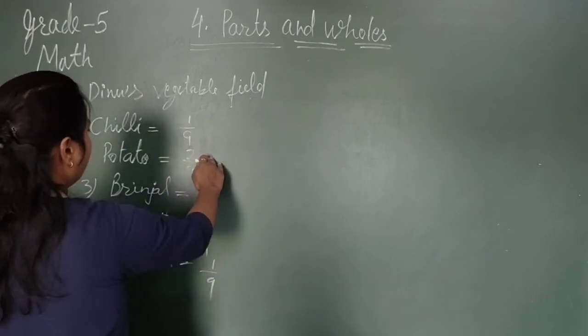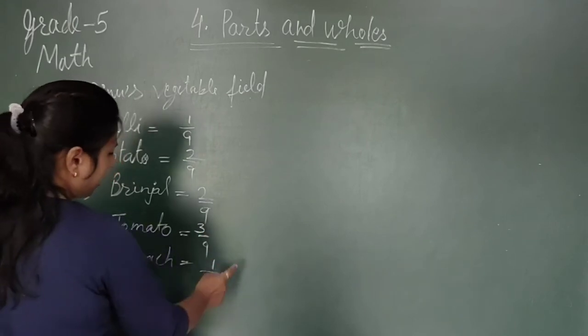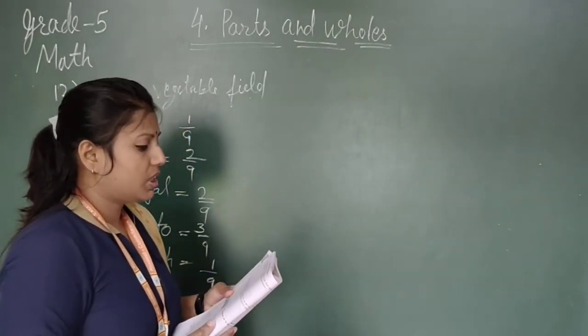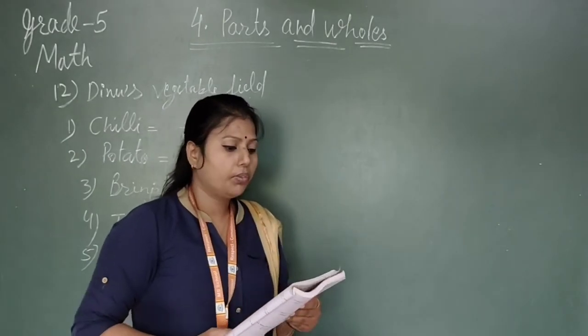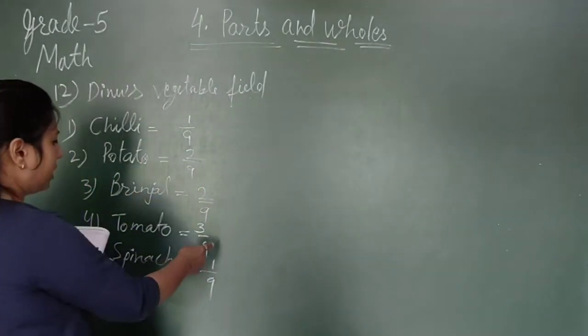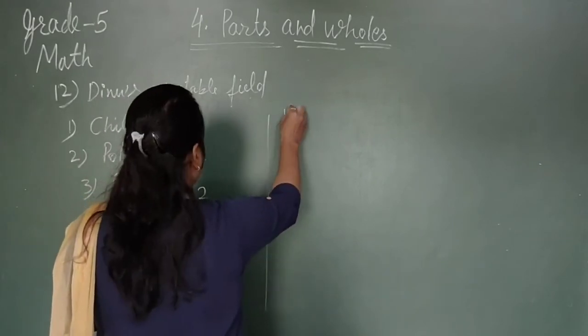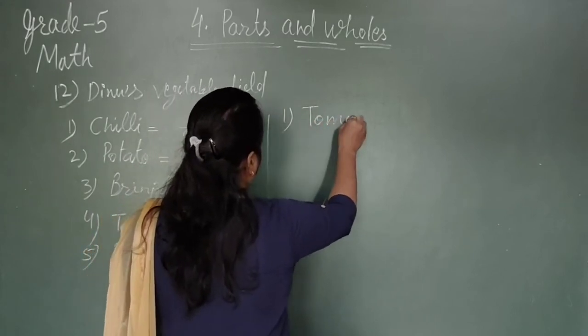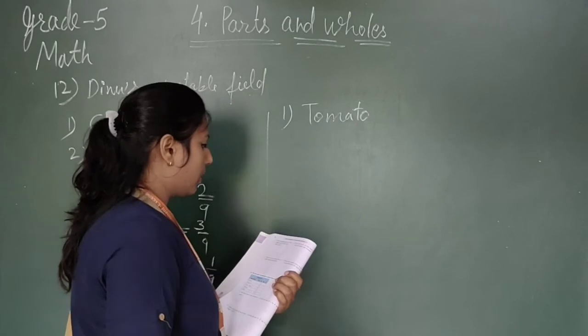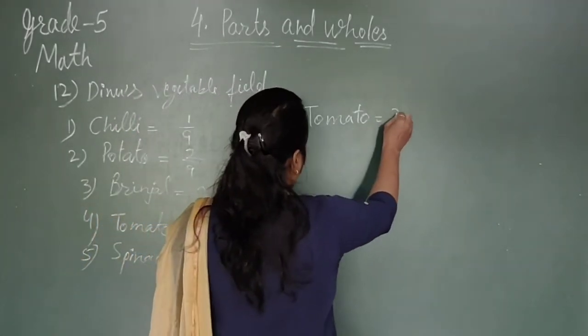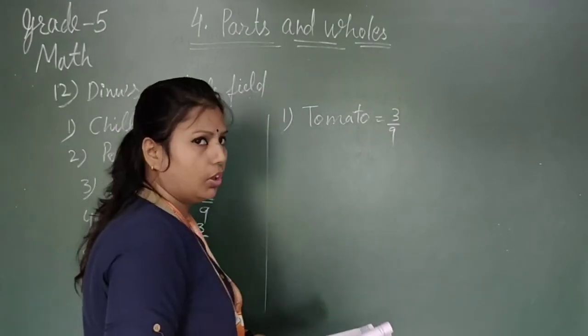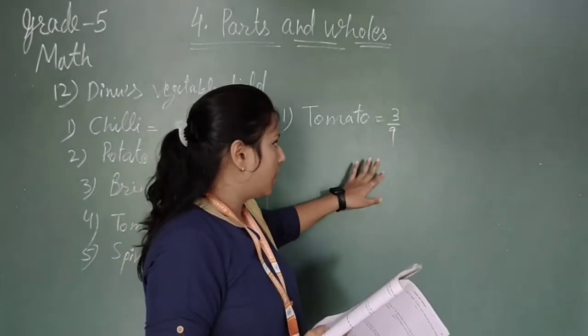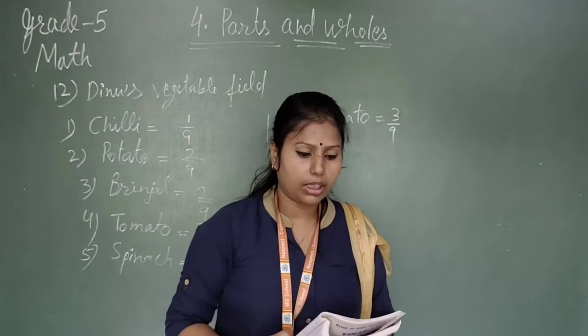You can count 1, 2, 3, 5, 8, 9. This denominator is equal. Now see question number 1: Which vegetable grows in the biggest part of the field? You can see tomatoes having 3 parts. So the answer is tomato, having the biggest part of the field. What part? That is three upon nine.